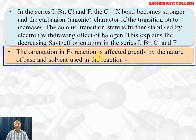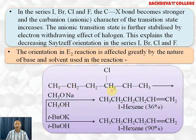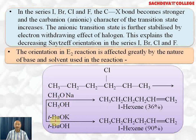The orientation in E2 reactions is also greatly affected by the nature of the base and solvent used. For example, with 3-chlorohexane: using sodium methoxide in methyl alcohol gives only 36% 1-hexene (less Hofmann product), whereas using potassium tert-butoxide in tert-butyl alcohol as solvent gives 90% 1-hexene. Thus E2 mechanism and its orientation are strongly influenced by both the base and the solvent.